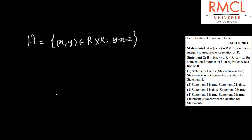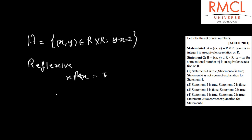For an equivalence relation, first we will check that A is reflexive or not. If it is reflexive, then X minus X should be an integer. We know that X minus X equals 0, and 0 is an integer number. So A is reflexive.